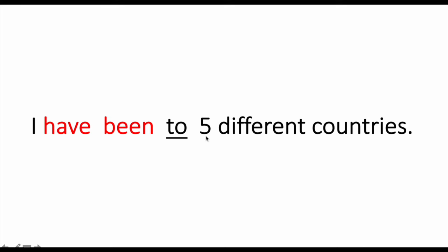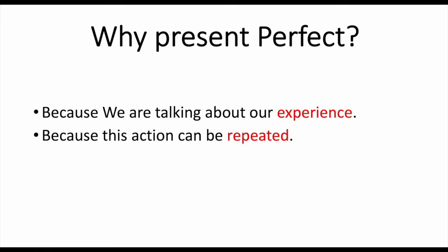I have been to five different countries. Can this number become six, seven, ten, twenty? Yes! That's why we use the present perfect — to talk about our experience, because our experience can change. We need 'have' plus the past participle or third form of the verb. Keep in mind: for present perfect you use 'to' plus the country. For example: 'I have been to France', 'I have been to Finland.'